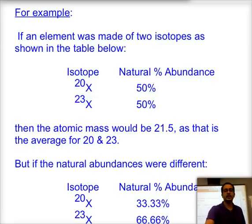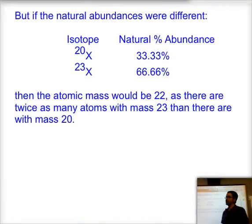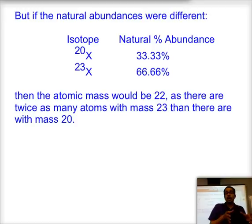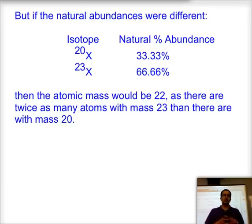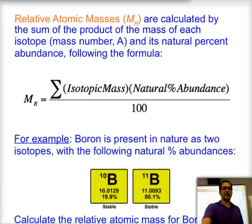What happens when natural abundances are not 50-50? If isotope-20 has one-third (33.3%) of the natural abundance and isotope-23 has two-thirds (66.67%), the weighted average is not 21.5 but instead 22, because there are more atoms with a mass of 23 than atoms with a mass of 20.